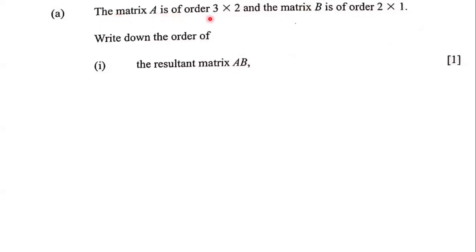The matrix A is of order 3 by 2, and the matrix B is of order 2 by 1. Write down the order of the resultant matrix A times B.